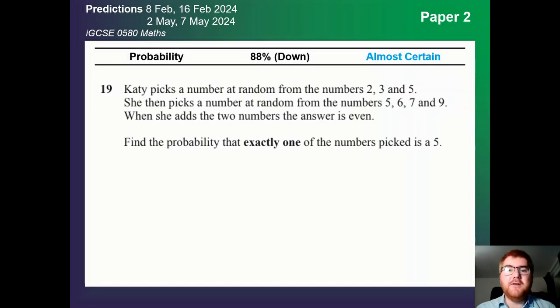We've got paper 2 here to start with. As we see, probability is always a big topic. It has gone down slightly from last year. I've taken the last 17 papers, keeping these predictions always up to date. We're now down to 88%. So not certain, but almost certain in this category here.